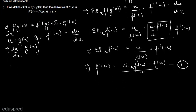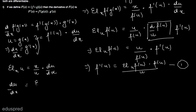The second expression is the elasticity of u with respect to x, which can be written as x divided by u multiplied by the derivative of u with respect to x. Therefore, the derivative of u with respect to x equals the elasticity of u with respect to x multiplied by u divided by x — this is equation number two.